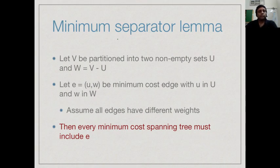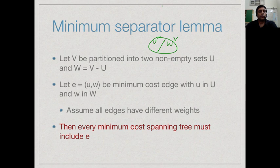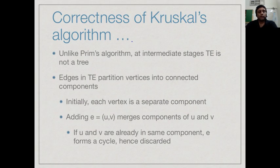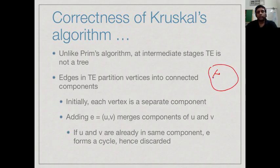We will use the same result used for Prim's algorithm: the minimum separator lemma. Recall what the lemma said: if we take our set of vertices and separate them into two non-empty groups U and W, and take the smallest edge connecting these two parts, then this edge must be present in every minimum cost spanning tree. Now in Kruskal's algorithm, unlike in Prim's algorithm, at the intermediate stages we do not have a tree — we just have a collection of components. As we add edges they connect components together.